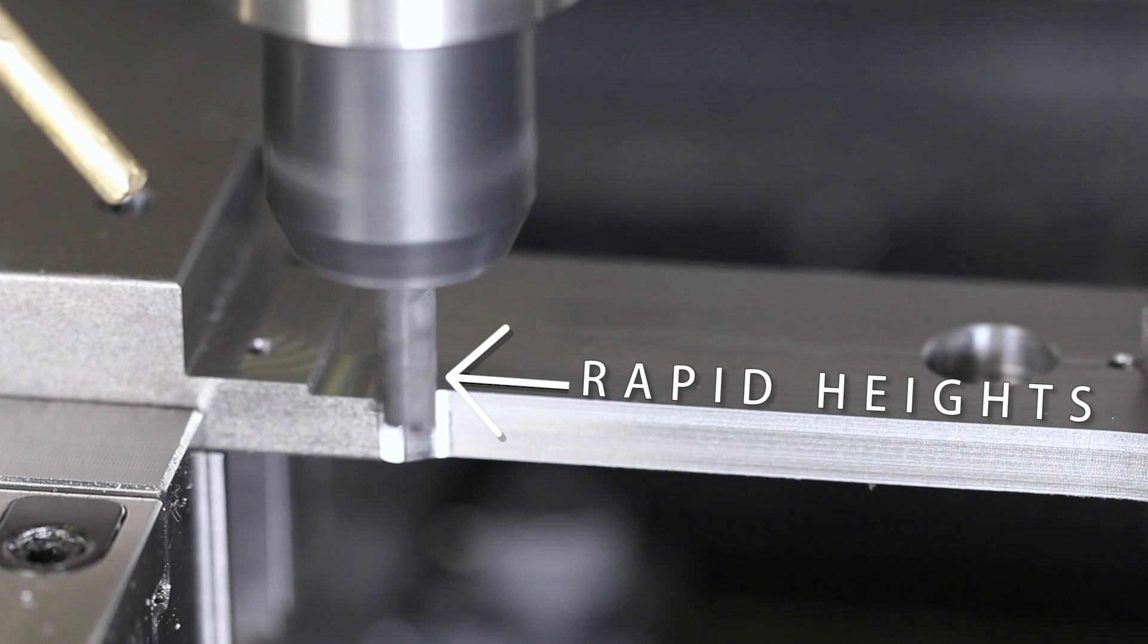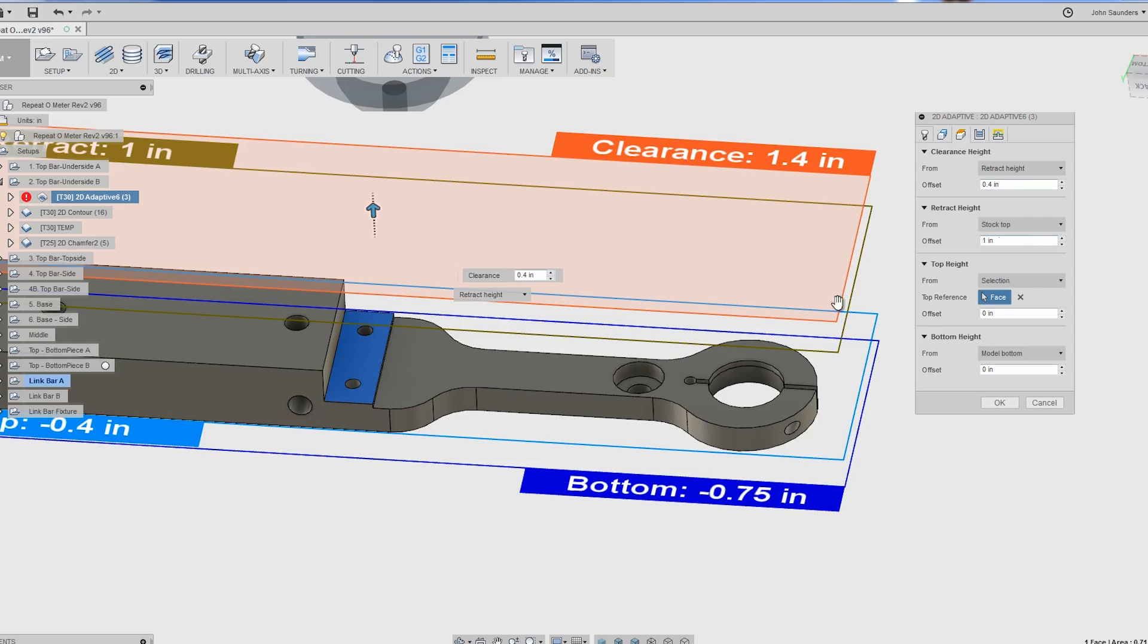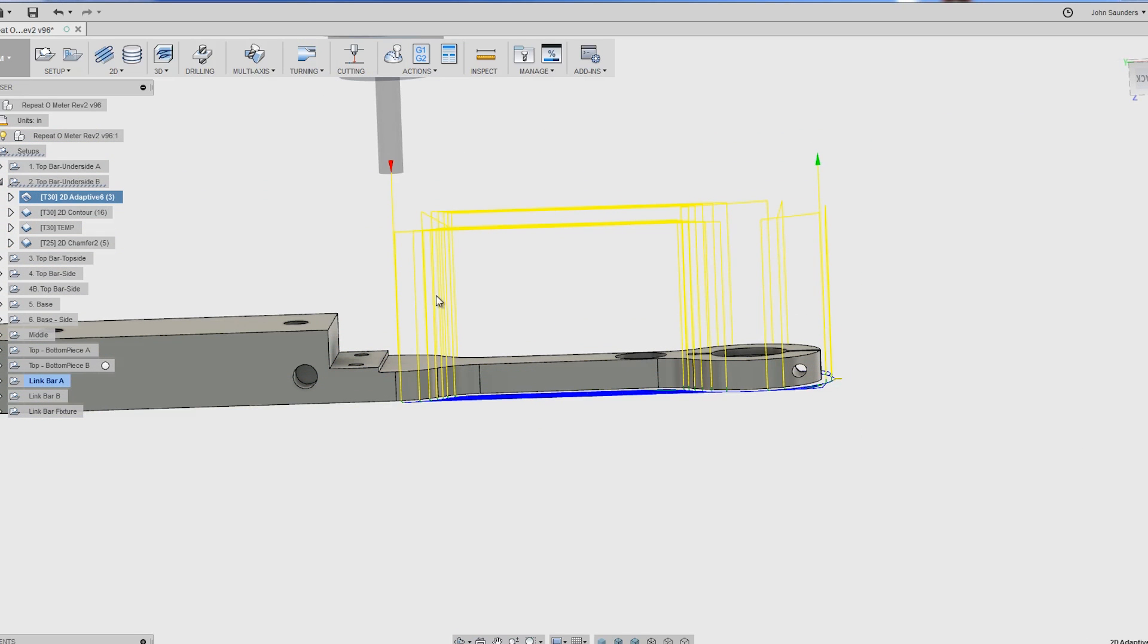Oops, forgot about rapid heights. So came in, adjusted my retract height and clearance height. That lifts those yellow lines up more to clear our fixture nut.